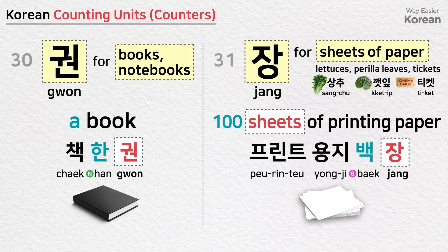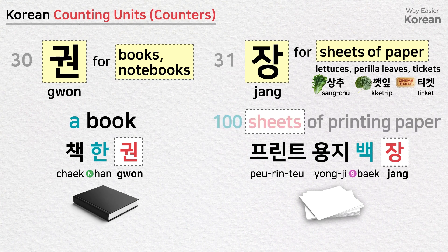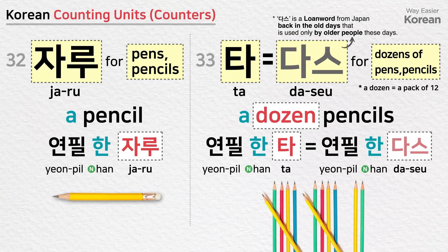권 is a counting unit for books and notebooks: a book — 책 한 권. 장 is a counting unit for sheets of paper, lettuces (상추), perilla leaves (깻잎), and tickets (티켓): one hundred sheets of printing paper — 프린트 용지 백 장. 자루 is a counting unit for pens and pencils: a pencil — 연필 한 자루.